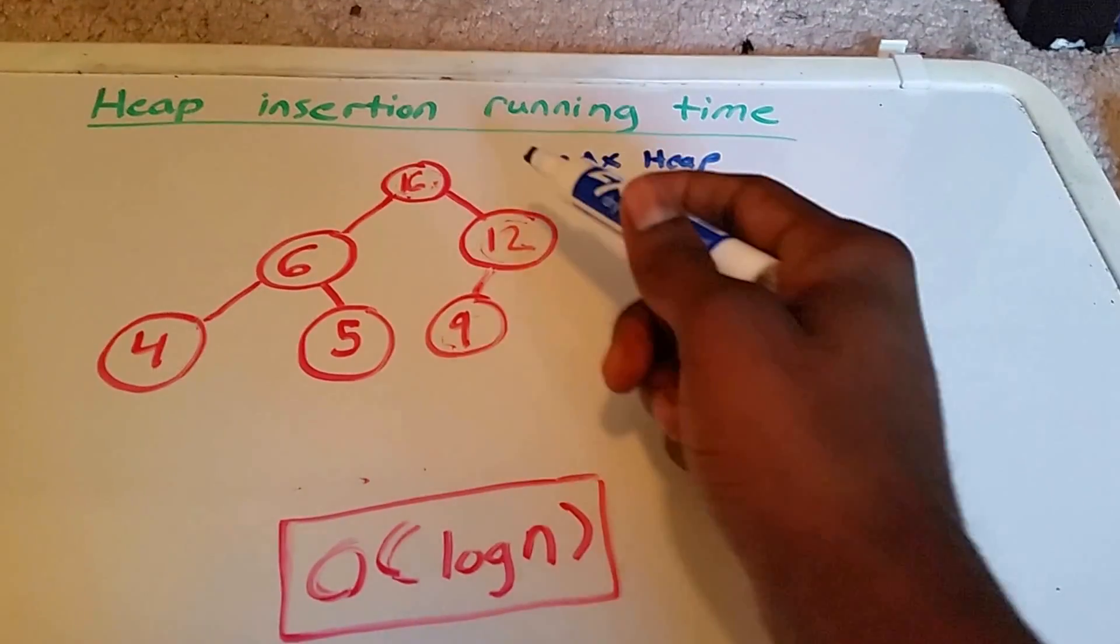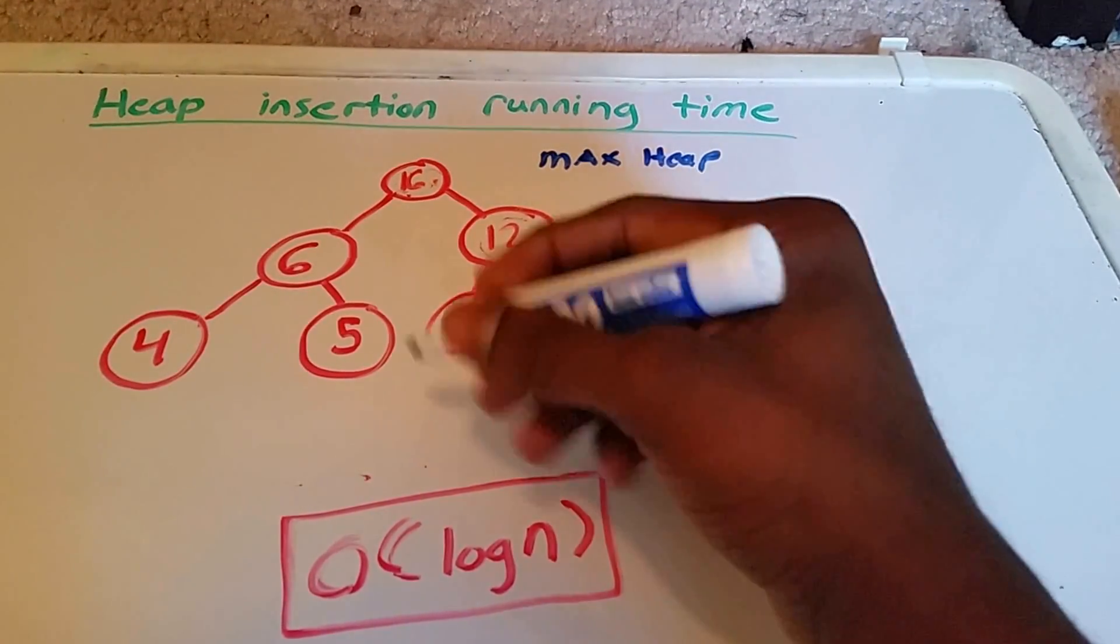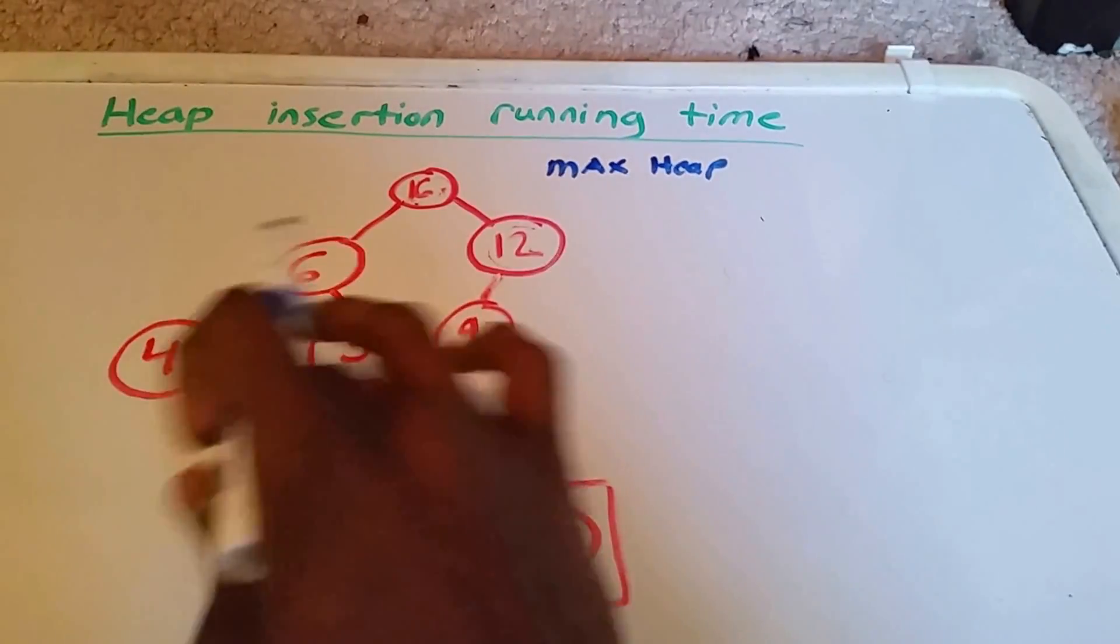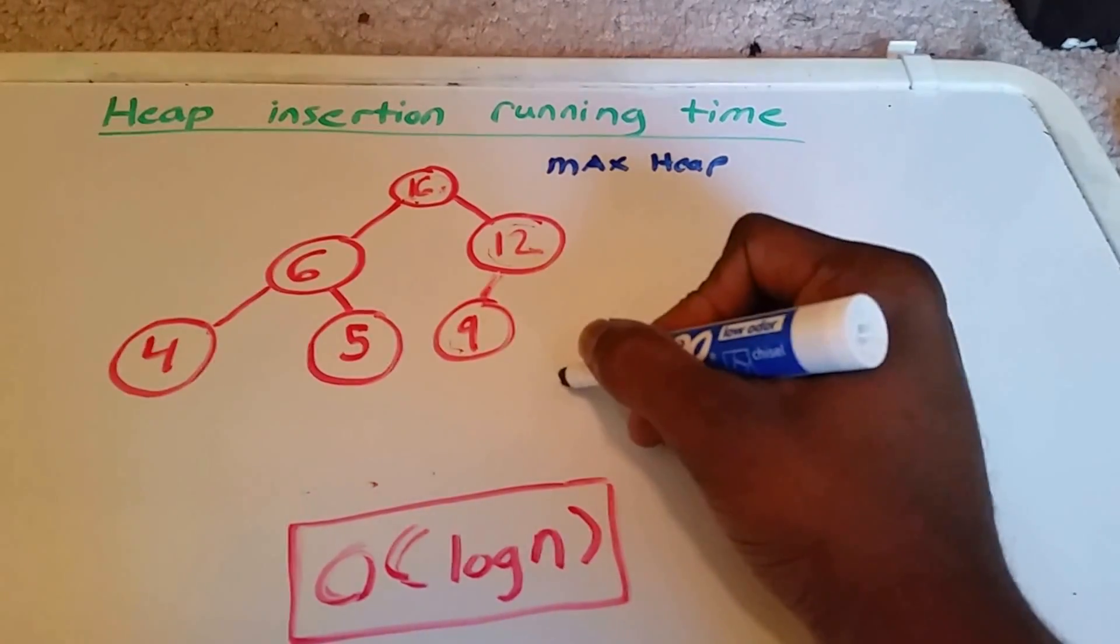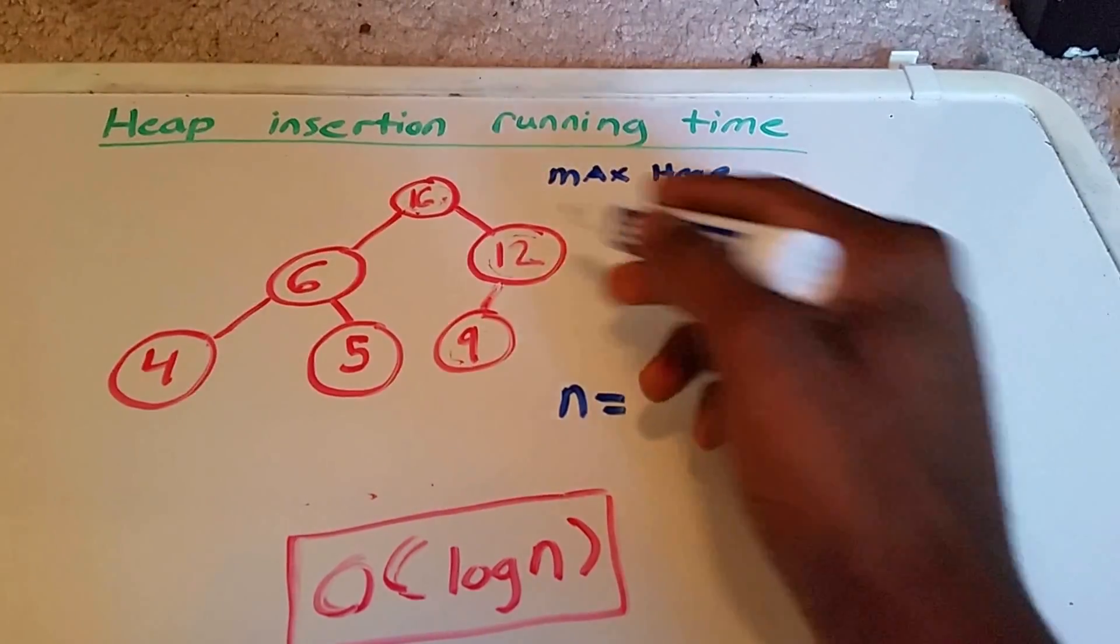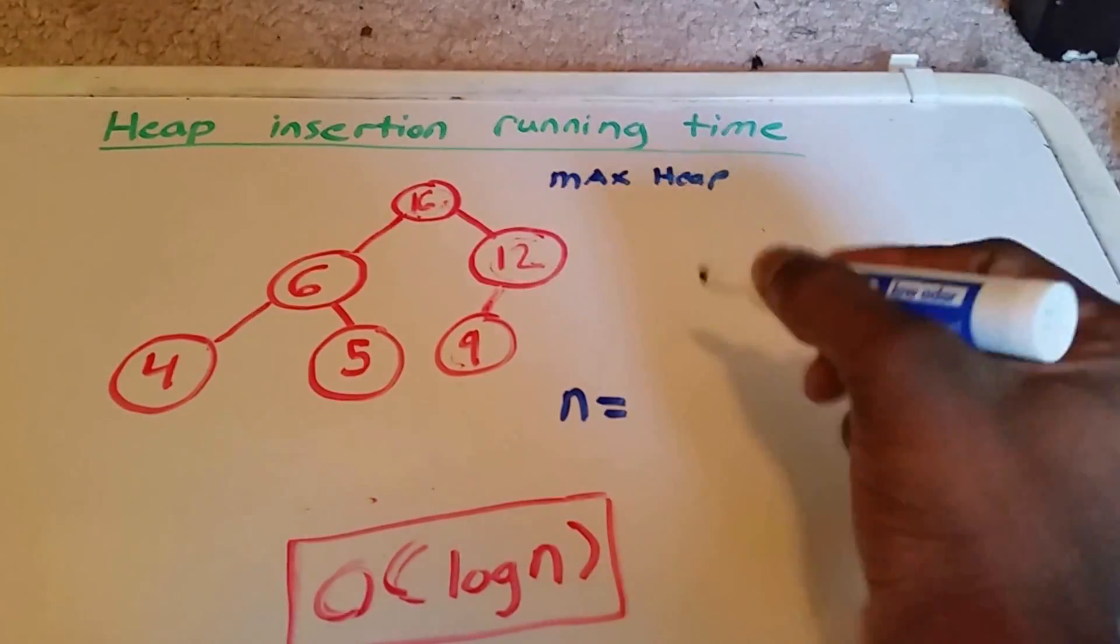We have a heap whose number of elements is 1, 2, 3, 4, 5, 6. So we're going to say n, which is the input size or the number of elements, is equal to 1, 2, 3, 4, 5, 6.